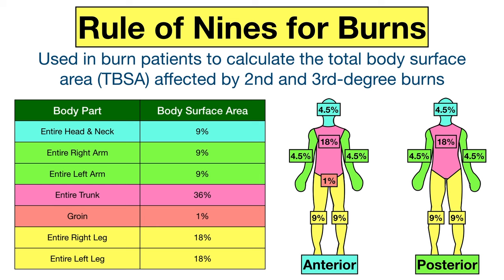The rule of nines is used in burn patients to calculate the total body surface area affected by second degree and third degree burns. This helps guide the patient's care, estimate fluid resuscitation, and determine if the patient requires care at a specialized burn center. The rule of nines only applies to partial thickness and full thickness burns, which are second and third degree burns. It does not apply to superficial burns, which are first degree burns.